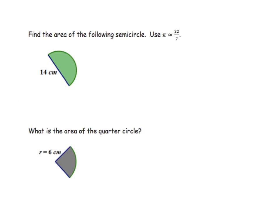Let's look at our first problem. This is a semicircle, so we know that it is going to be half of a normal circle. It says find the area. Now be very careful with this lesson because sometimes it's going to say area and sometimes it's going to say circumference. To find the area of a whole circle, it's pi r squared. But because it is half, we're going to divide it by 2. Notice what we're given — we're given the diameter, so we have to divide it by 2 to get the radius. Then it's just a matter of plugging in what you know.